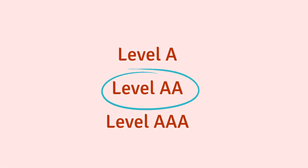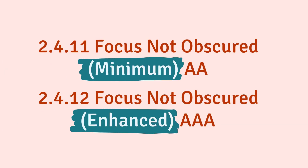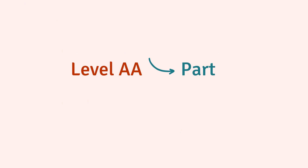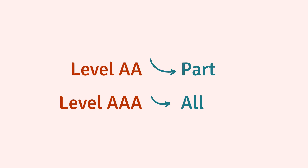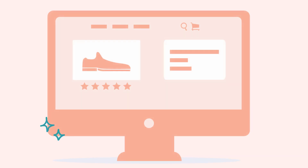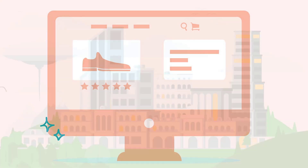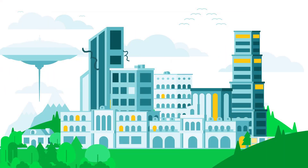Focus Not Obscured Minimum is a level AA criterion, but it has a level AAA companion: 2.4.12 Focus Not Obscured Enhanced. At level AA, only part of the component needs to be visible. At level AAA, all of the component must be visible. Whichever level you need to meet, aim for maximum visibility and look forward to a better internet.